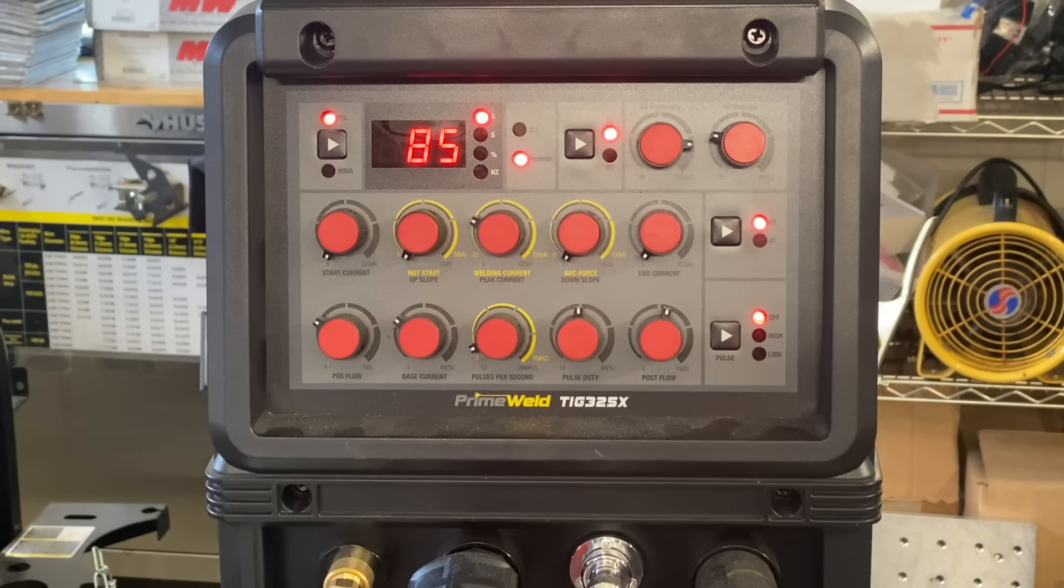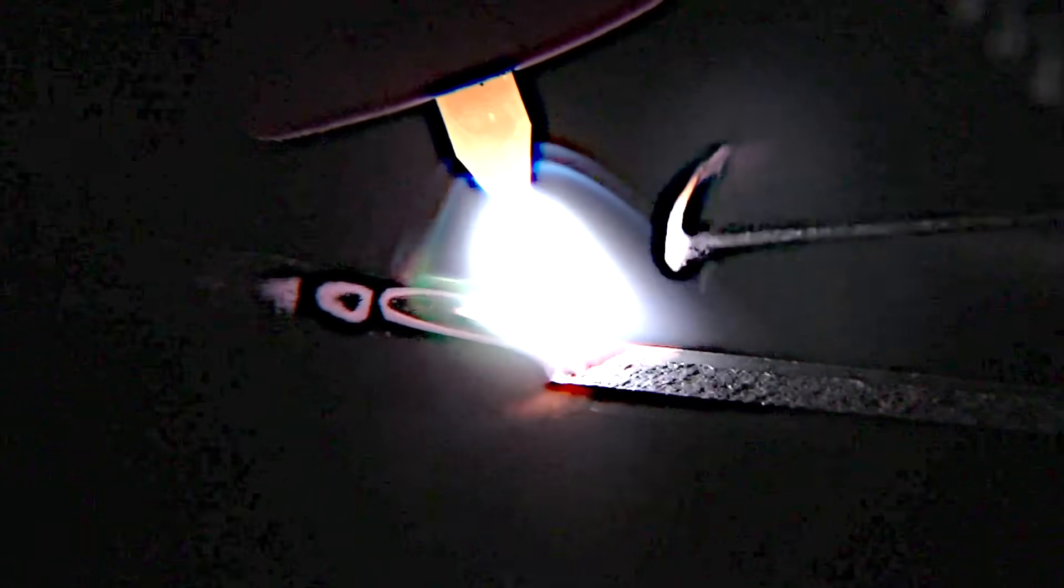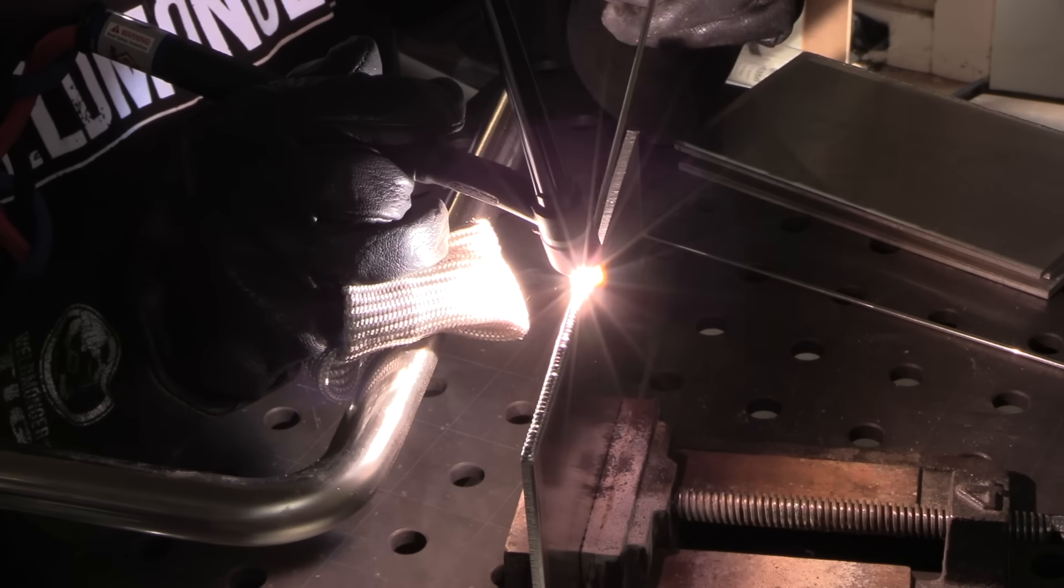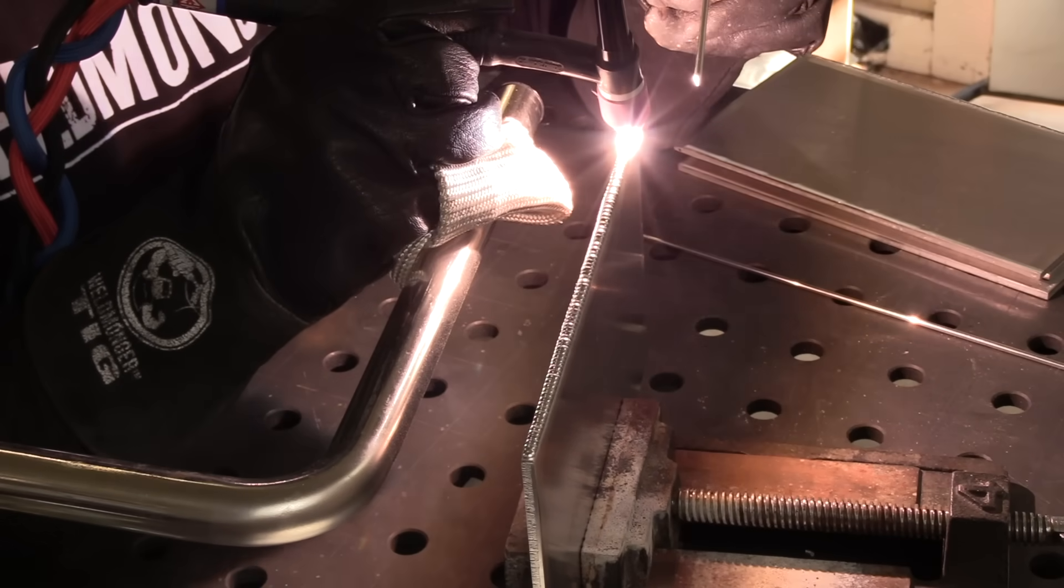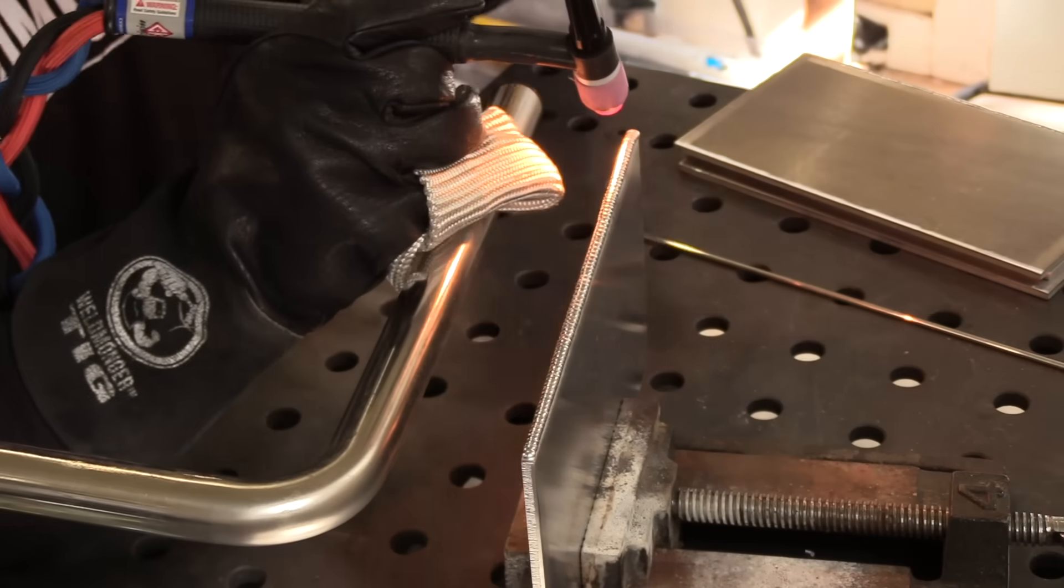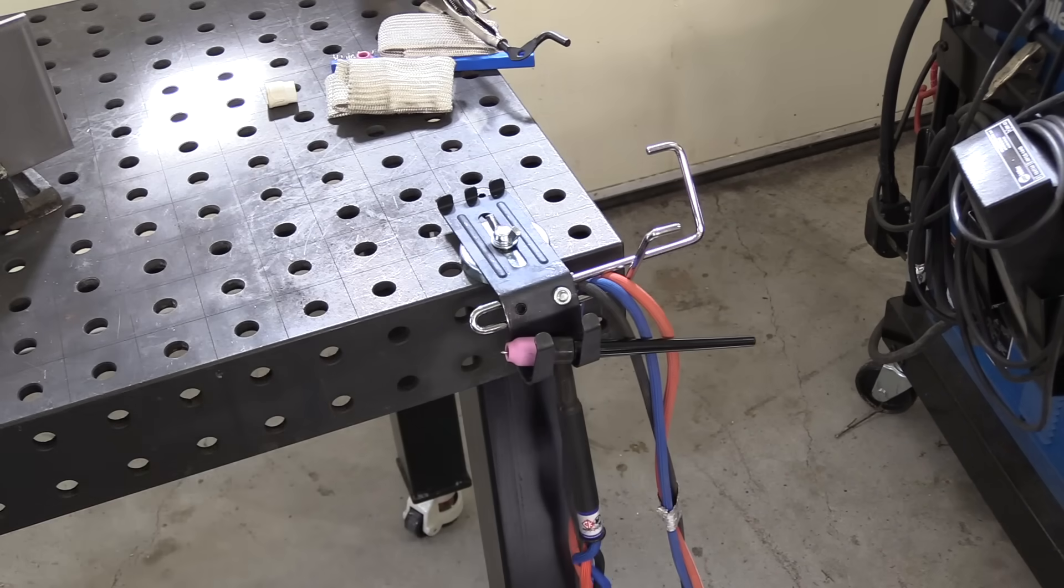Welding on an edge requires a whole lot less amperage. I'm only using 85-86 amps right here. I'm using a pink cup so it's not lighting things up quite as much as you saw earlier with that clear cup. It does a fine job though. I like a number 6 gas lens for something like this. Good all-around cup for aluminum.